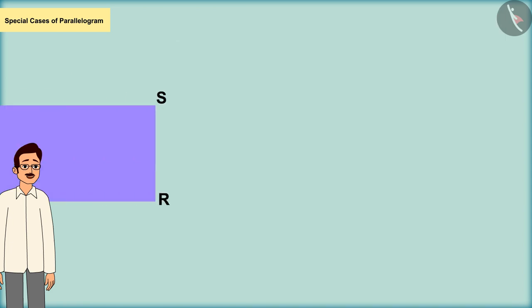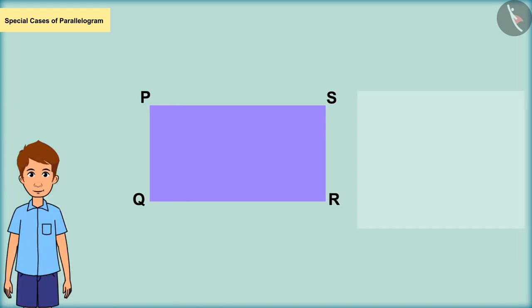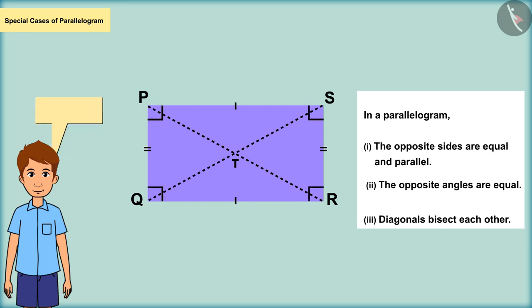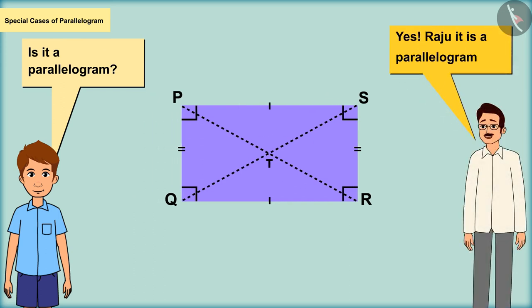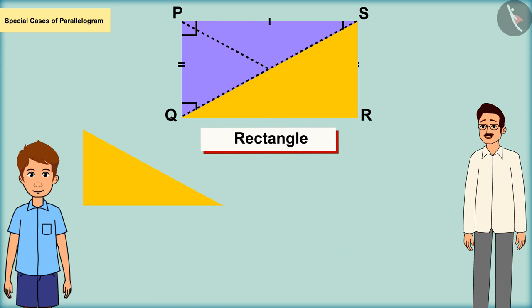Raju discussed the figure he made. He created a parallelogram keeping in mind all the features of a parallelogram, but drew all right angles. Yes, Raju, it is a parallelogram, but it becomes a special type of parallelogram because all its angles are right angles, and we call this particular parallelogram a rectangle.